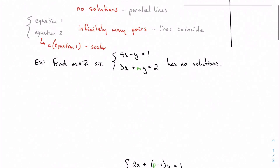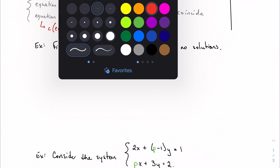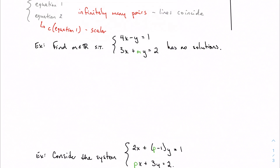Since I expect you to know how to solve systems already, let's look at something a little more difficult. If I want to find the value M — a real number such that this system has no solutions — we should start by solving the system. The easiest approach is substitution. Looking at the first equation, 4x minus y equals 1, I can rearrange to get y equals 4x minus 1.